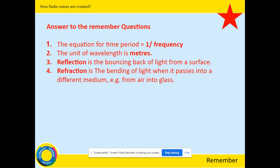Number four, refraction. Refraction is the bending of light when it passes into a different medium — for example, from air to glass, air to water, glass to air, or water to air. Anything that's more dense or less dense will cause light to bend towards or away from the normal. Number five, the equation for wave speed is wave speed equals frequency times wavelength.